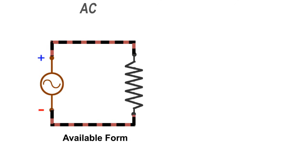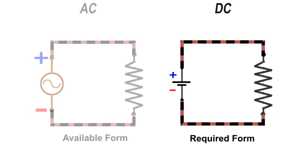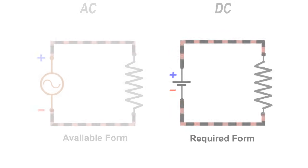When available electrical supply is in alternating form and required form is DC supply, conversion is required to be done, which is known as AC to DC conversion or rectification.